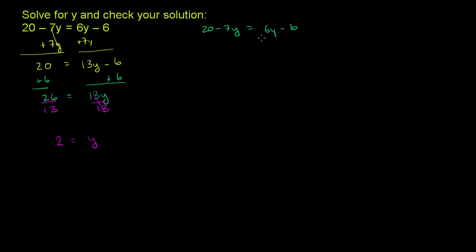Now let me just subtract 6y from both sides. So minus 6y or negative 6y from both sides. The left-hand side over here is 20 minus 13y. The right-hand side, I got rid of that 6y. I just have the minus 6 here. It's just a negative 6 now.